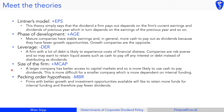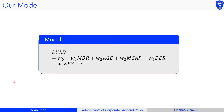The final theory is the pecking order hypothesis. This says that firms with better growth opportunities will retain more funds for internal funding and therefore pay fewer dividends. This predicts a negative correlation with the market-to-book ratio. That covers all the theories.